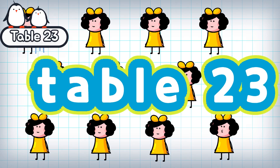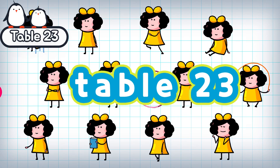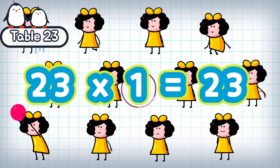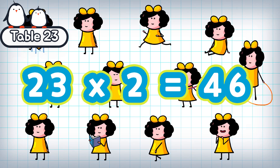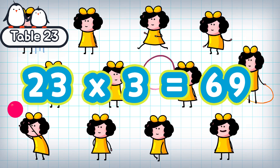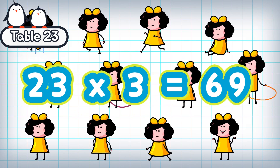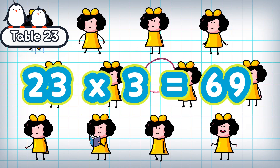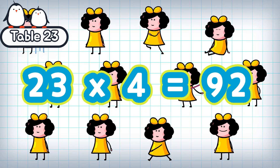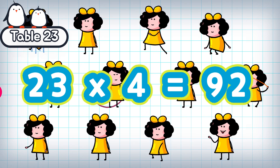Table 23. 23 times 1 is 23. 23 times 2 is 46. 23 times 3 is 69. 23 times 4 is 92.